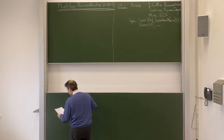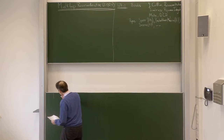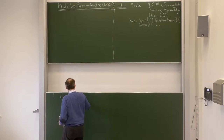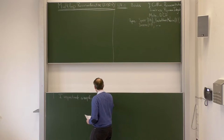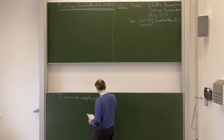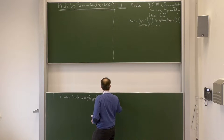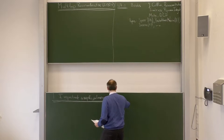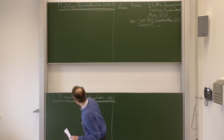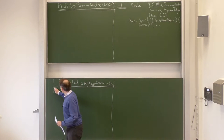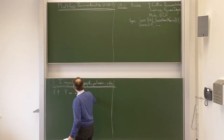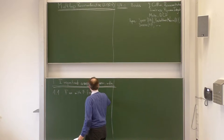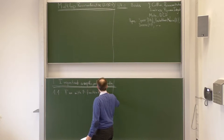But today we will start with chapter one, which is important examples and preliminary mathematics. And we will begin within this context with the gamma function — let's call it friends of the gamma function.